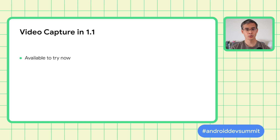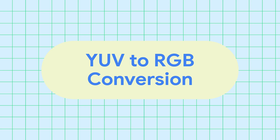That was a quick overview of the video capture API. It's available to try now in 1.1. Another highly requested feature has been YUV to RGB conversions. Let's take a look at it.